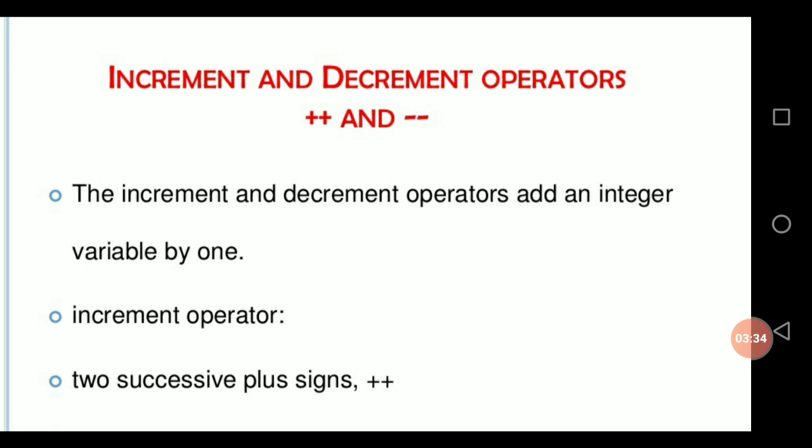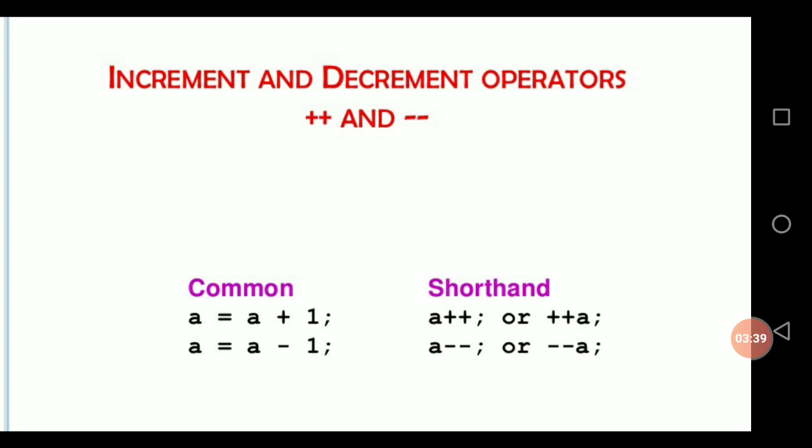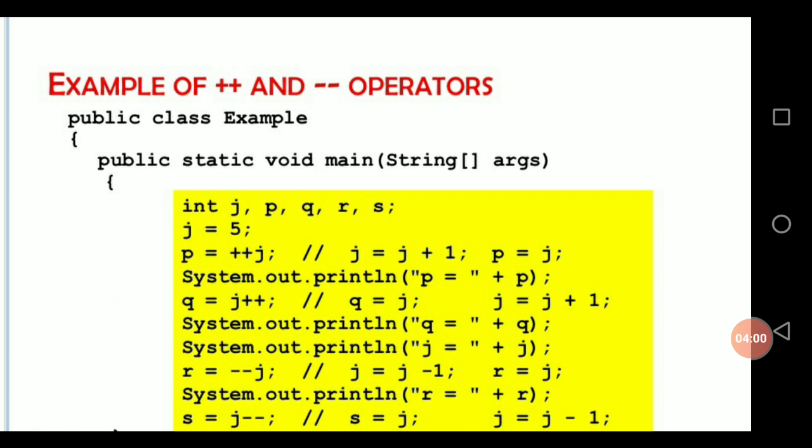This slide shows examples of increment and decrement operations. A++ is called postfix increment. ++A is called prefix increment. Similarly, A-- is called postfix decrement, and --A is called prefix decrement.